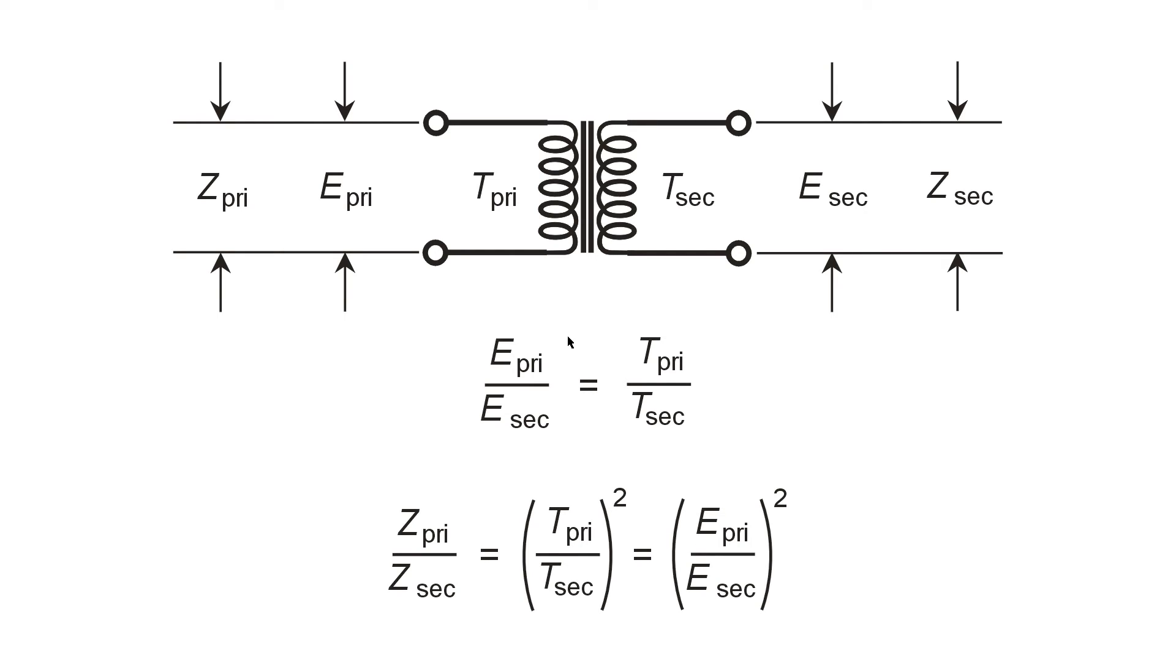So it might match, say, 800 ohms impedance to only 8 ohms impedance. An amplifier with an output impedance of 800 ohms, purely resistive, no reactance, could be matched to an 8 ohm loudspeaker, an audio amplifier, as you might have guessed by that description.